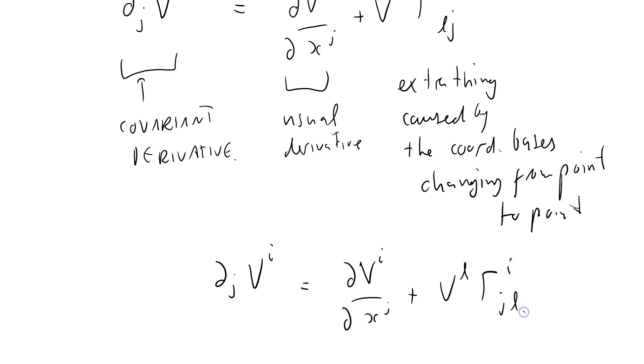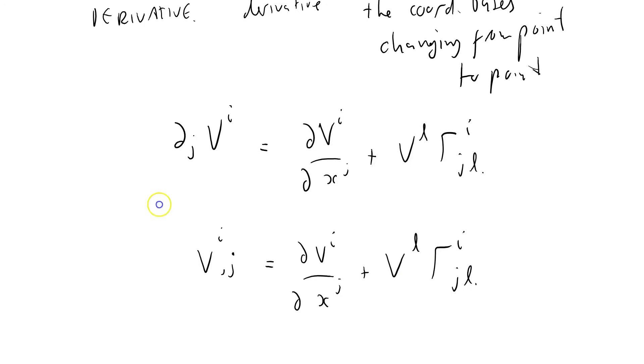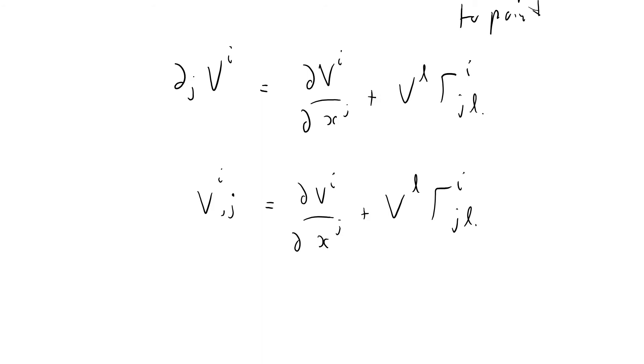This is the notation I've seen. Other notations that I have seen are as follows. v^i comma j equals ∂v^i/∂x^j plus v^l Γ^i_jl. I've seen that notation before. This is the same thing.